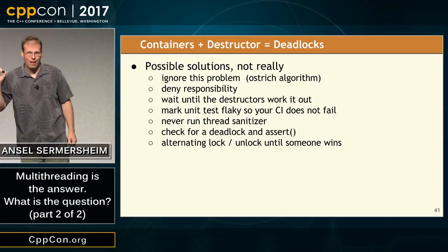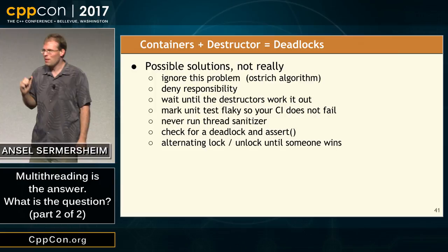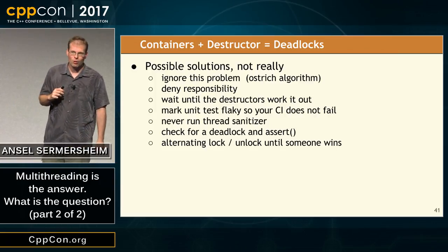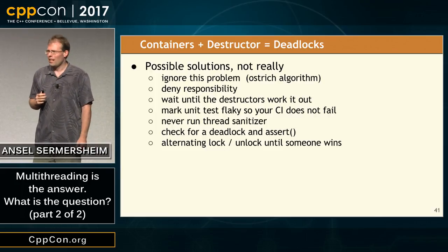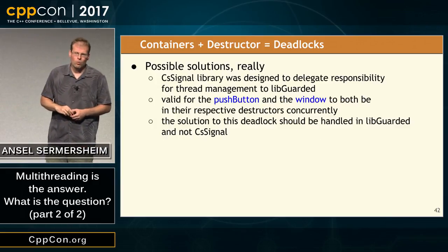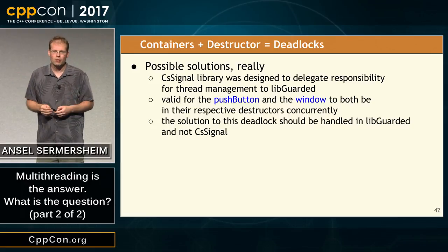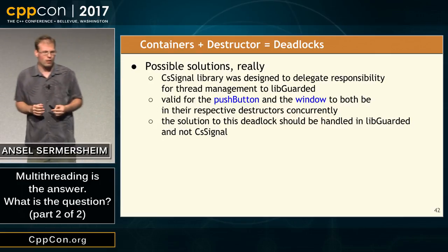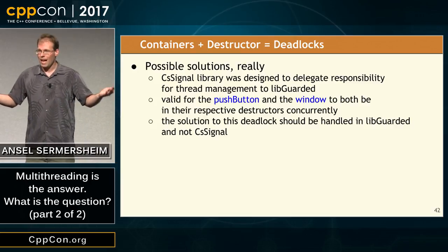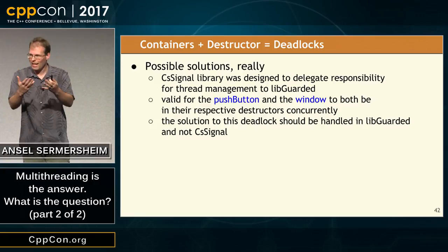It's vitally important, if you have this situation, never to run thread sanitizer on your code, because it will find this problem — even if the deadlock does not occur, it will warn you of the incipient deadlock. When we were designing CS signal, we said this is a library that needs to be multi-threaded, but we're delegating all responsibility for threading to LibGuarded. We have a threading problem, therefore it should be solved in the threading library. It's totally valid for both of these destructors to be active simultaneously — we need a sane result, so we need a guarded type that can handle this.